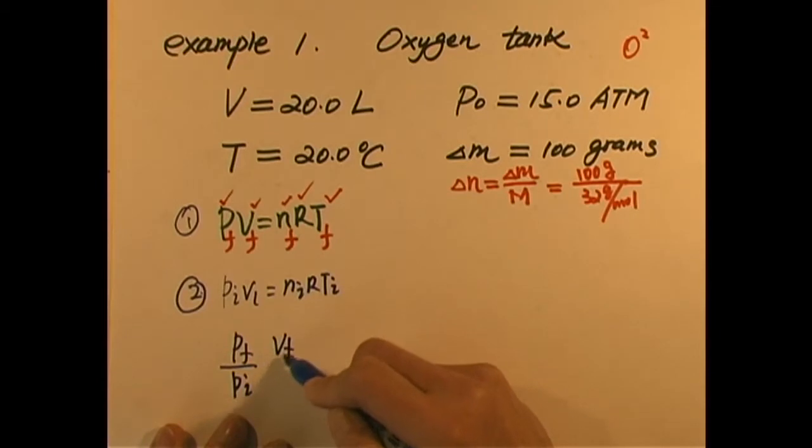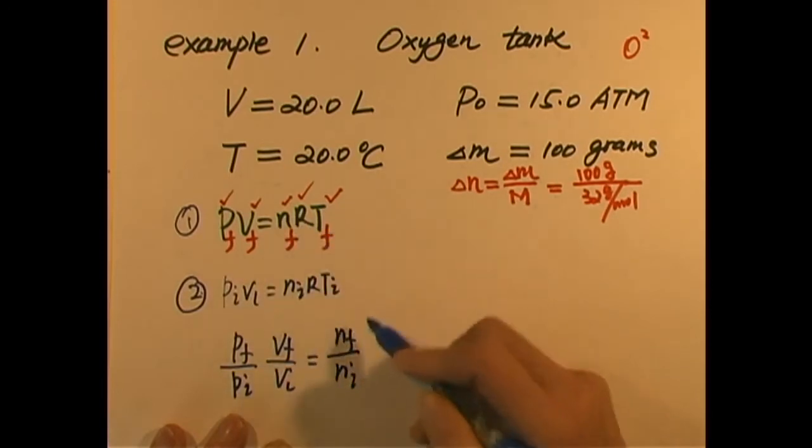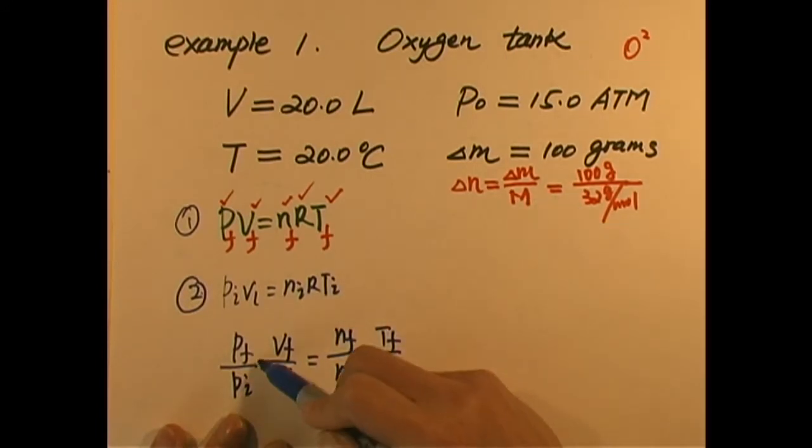However, sometimes we actually use a technique which is very popular. That is, imagine we have such equation. Then we have another one. P initial V initial equals n initial R T initial. Everything is different. Initial for pressure, volume, n and T. And final, this is a general case. So if we use equation 1 divided by equation 2, what do we get is P final over P initial, V final over V initial equals n final over n initial. R cancels, and T final over T initial.